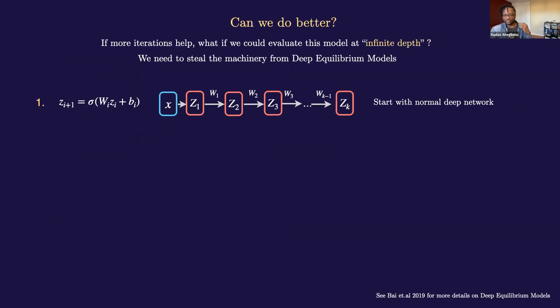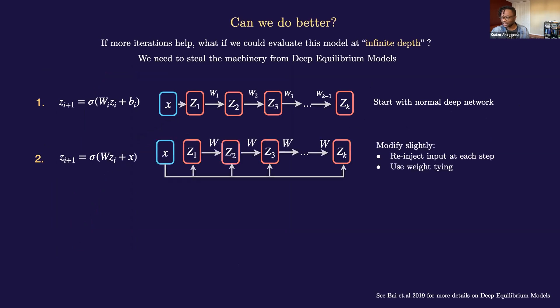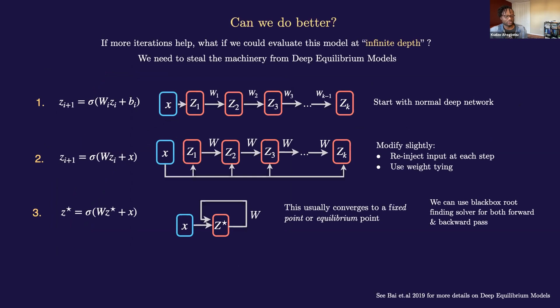Okay, so if the argument here is that more test time compute, more iterations is good, what would happen if we could evaluate this model at infinite depth? In other words, could we do better? In order to answer this question, we need to steal the machinery of deep equilibrium models. Now, I don't have a whole lot of time to go into the details of deep equilibrium models, but I suggest that you check out the paper by Shaoju Bai or the NeurIPS workshop from this past year.